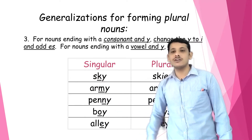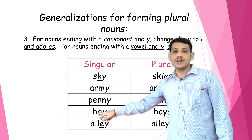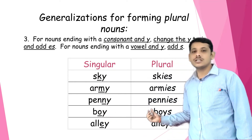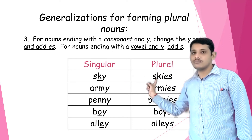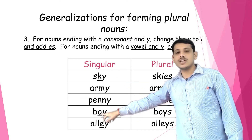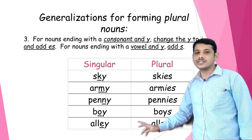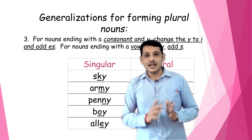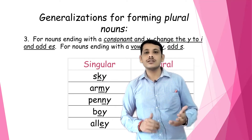But for words like 'boy' and 'alley', before the 'y' there is a vowel. We know that in English there are only five vowels: a, e, i, o, u. In 'boy', before 'y' there is the vowel 'o', so this 'y' will remain as it is — we should not change it into 'i'. We keep 'y' as it is and just add 's': boy → boys, alley → alleys.